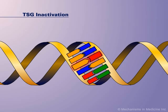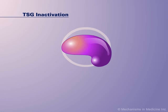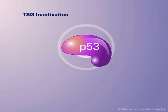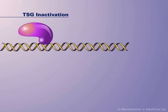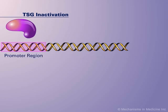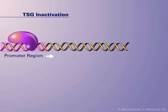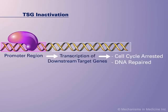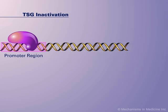A TSG loss that is thought to occur in 80% of NSCLC cases is that of P53. P53 is a transcription factor for various downstream targets that are involved in cell progression, DNA repair, and regulation of apoptosis. Mutations to P53 hinder its normal tumor-suppressing capabilities.